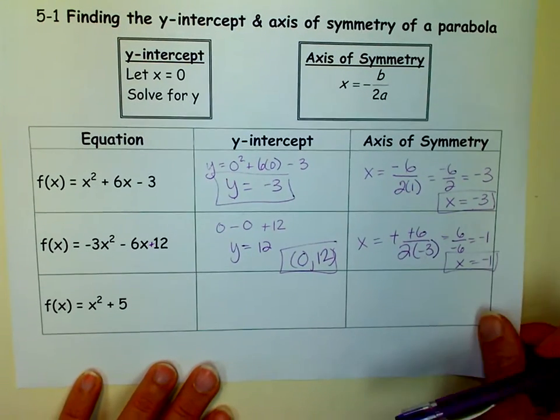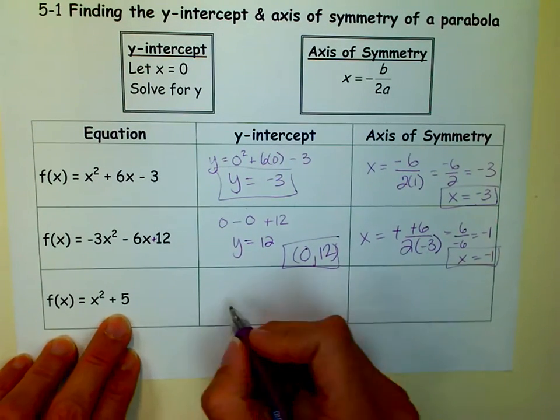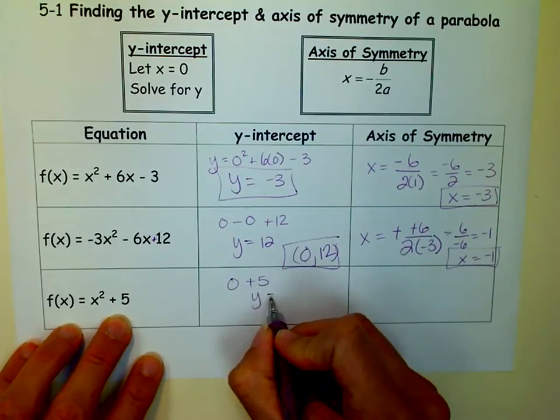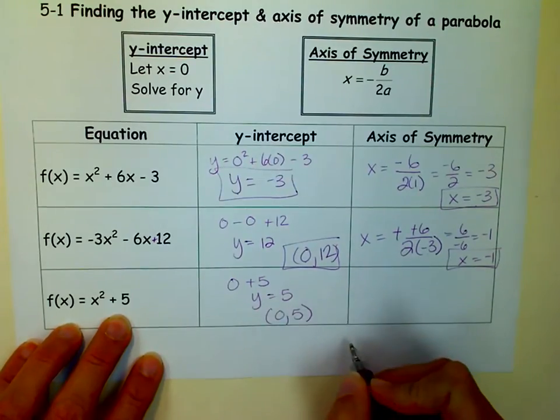And on to the last one. Y-intercept. We make x equal 0, so I get 0 plus 5. So I get y equals 5, or if you wanted to do the coordinates again, you could say 0, 5.